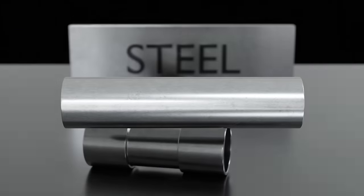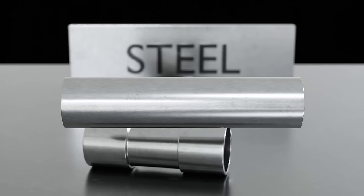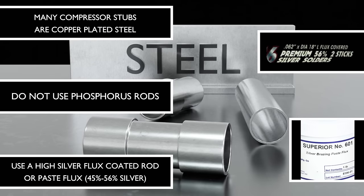Next, we have steel. You'll run into some valves that are made of steel. And you'll certainly run into steel on compressor stubs if the copper plating is burned through. And in some cases, the stubs may just be steel. When you're working with steel, do not use phosphorus-bearing rods. Any rod that says FOSS on the packaging, or has phosphorus in them, should not be used on steel. Use a high silver flux-coated rod or a high silver rod or wire with a separate paste flux, as shown here.